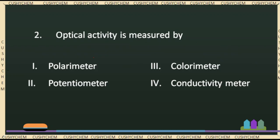The next question is a very direct, very basic question. It involves organic chemistry and even inorganic chemistry. Optical activity is measured by an instrument. Options include polarimeter, potentiometer, calorimeter, and conductivity meter. Optical activity is measured using plane polarized light, and the instrument used is the polarimeter. The polarimeter is used to measure the optical activity of any molecule.